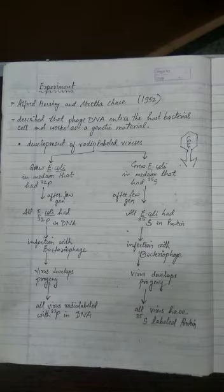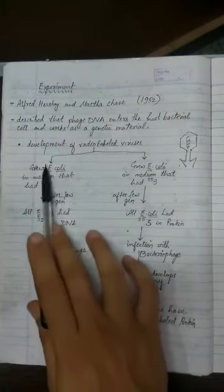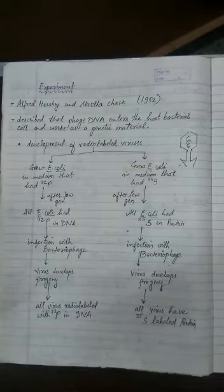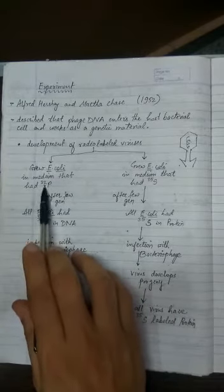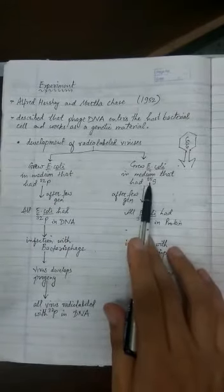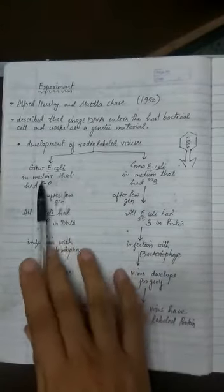The main challenge is you cannot perform experiments directly on viruses because outside of their host they are essentially non-living. We can easily grow bacteria in a lab or keep animals in a lab, but you cannot grow viruses in a lab. So the first thing they did was take the host cell — Escherichia coli, or E. coli. They grew E. coli in two media: one containing the radioisotope phosphorus-32 and the other containing sulfur-35.